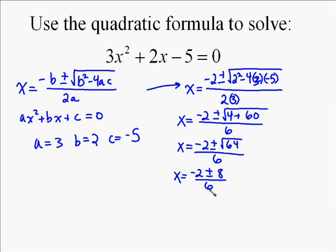Now whenever you actually know that square root, you've got to find the two separate answers. So we're going to do negative 2 plus 8 over 6, and then negative 2 minus 8 over 6. Well, negative 2 plus 8 is 6. 6 over 6 equals 1. So one of your answers is 1.